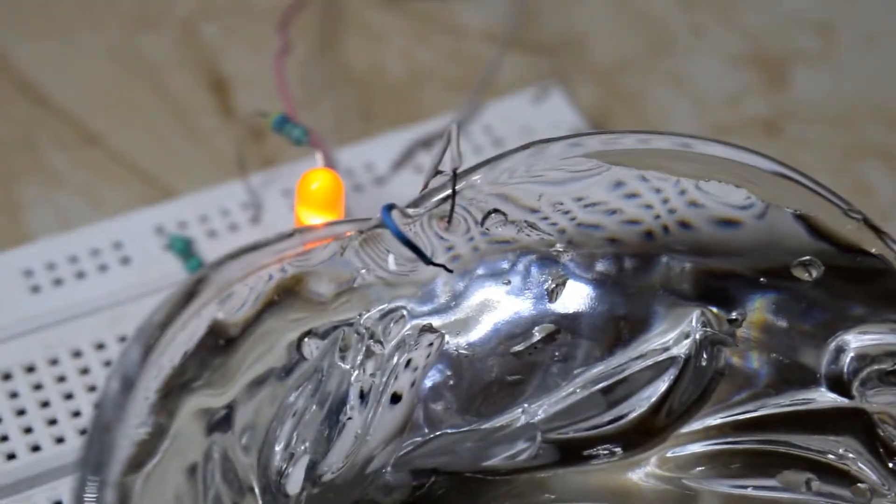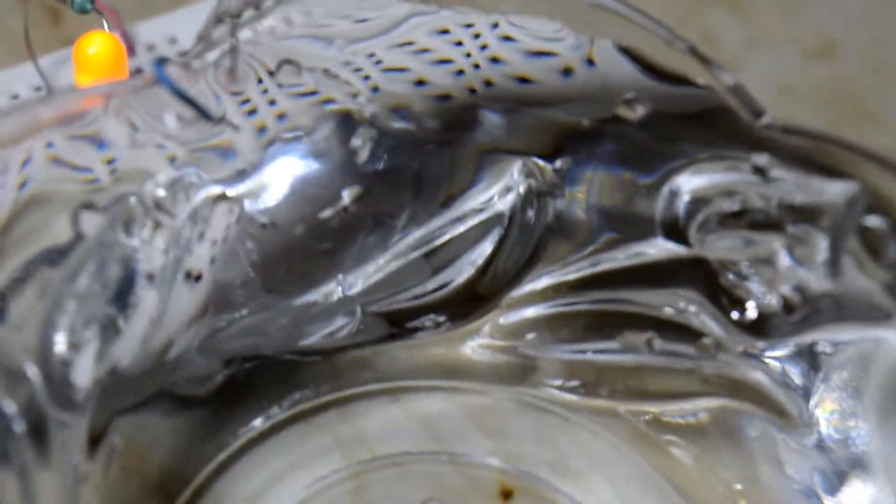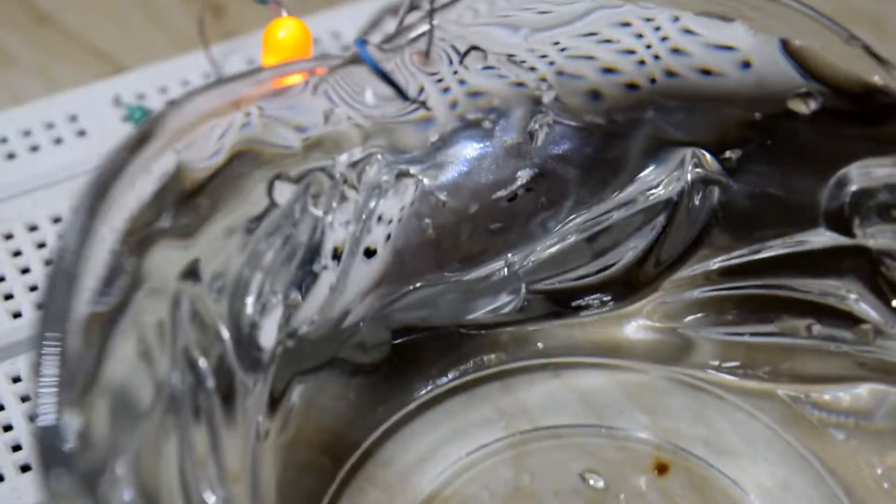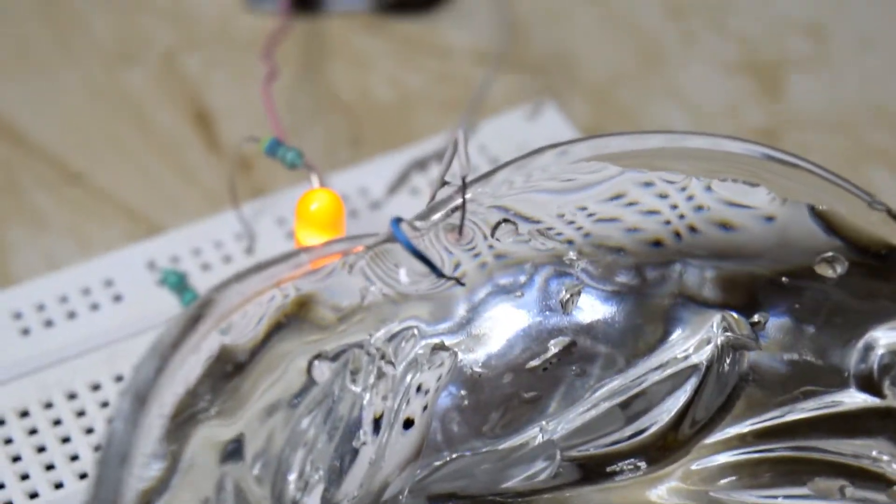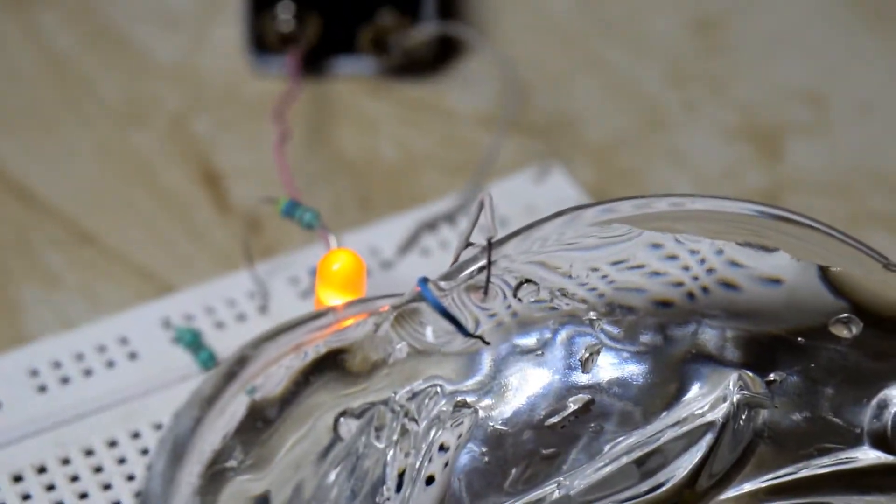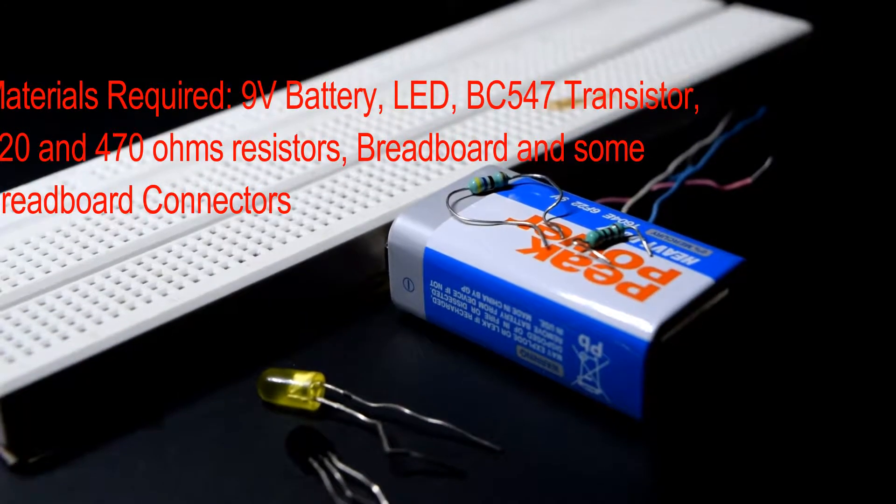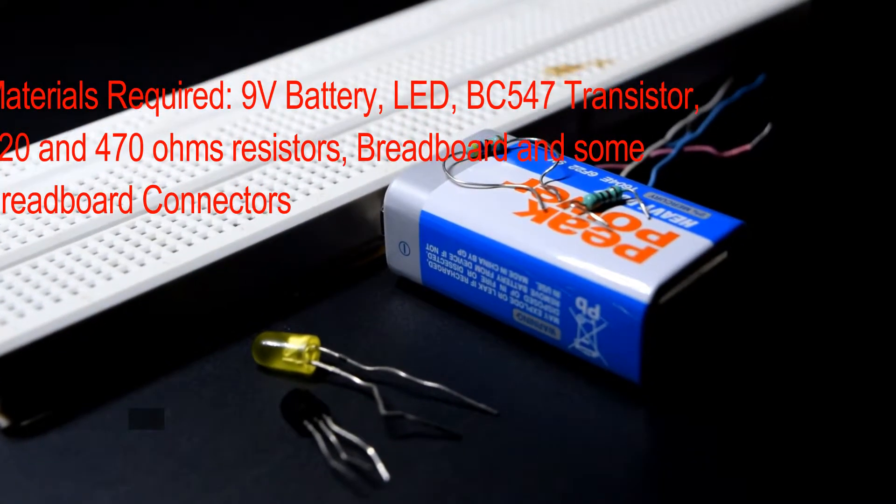Hello all of you. Today I will show you how to make this simple water level indicator. As soon as water touches both of these wires, the LED glows up. Let's get started.